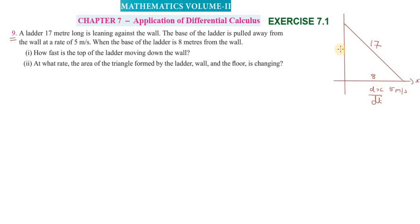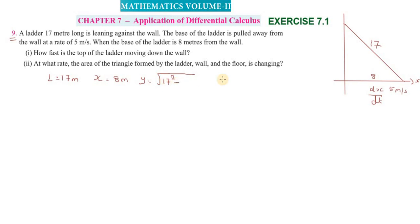Using the Pythagorean theorem with hypotenuse 17 and adjacent side x = 8, we find y: y = √(17² − 8²) = √(289 − 64) = √225 = 15. So y = 15 meters.